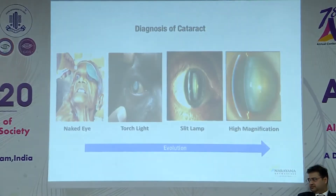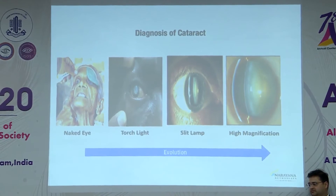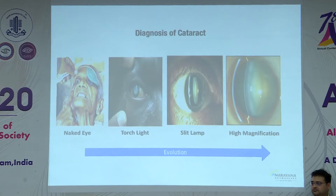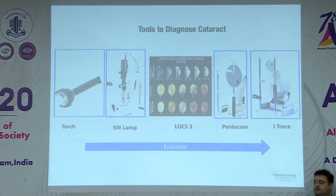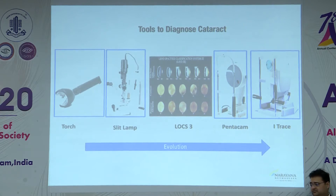The diagnosis of cataract has evolved over the years, from naked eye examination to torchlight to slit lamp and now high magnification. The tools to diagnose cataract have also evolved, from torchlight to slit lamp. For the longest time we were using the LOCS3 classification, and now we have the Pentacam and the eye trace.